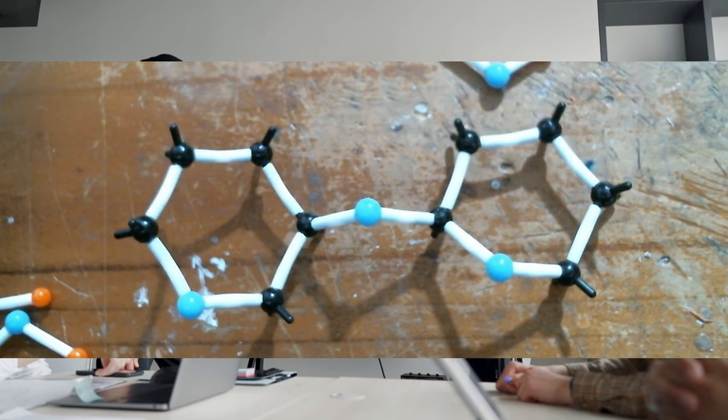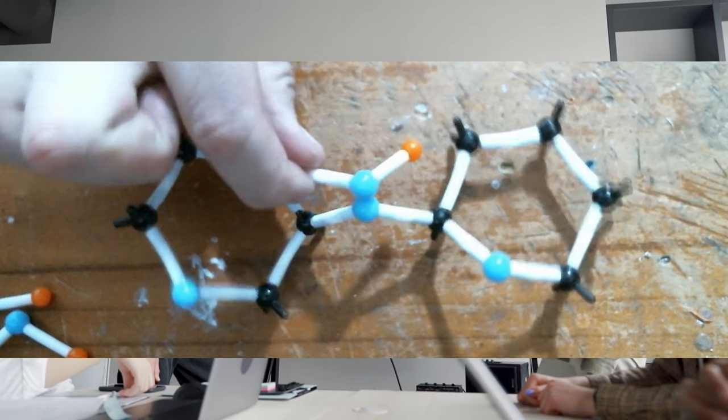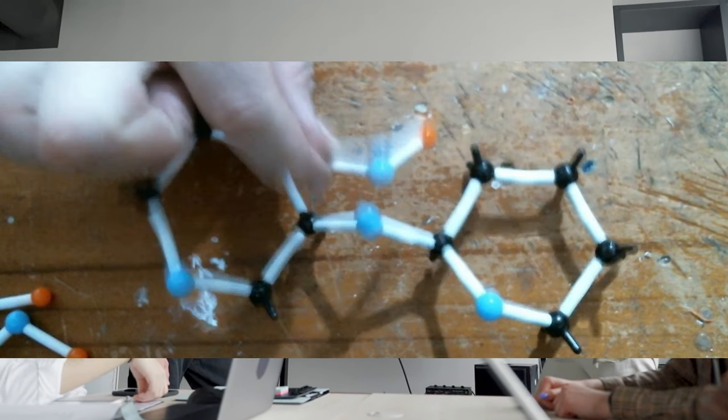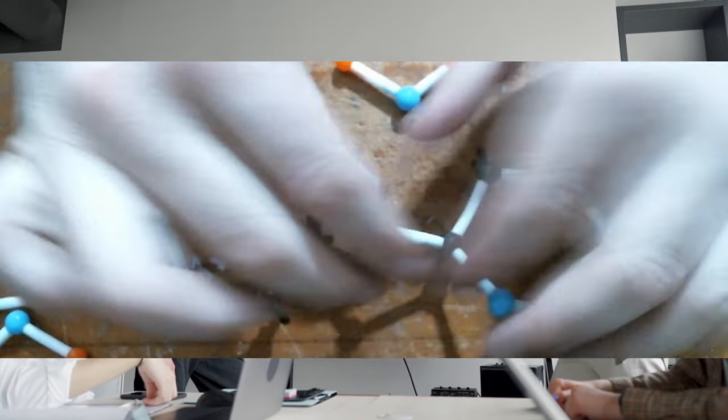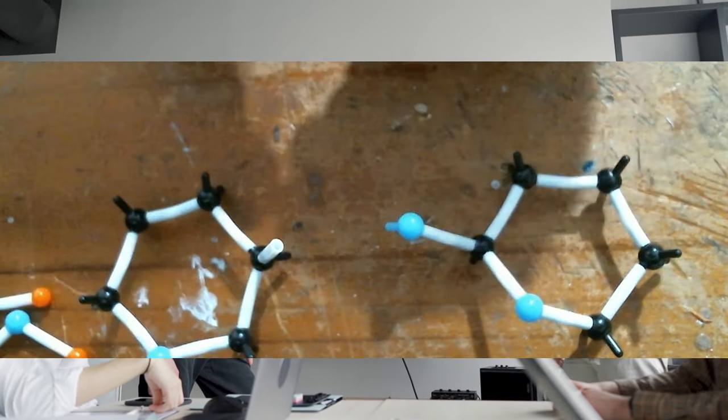This leads to a disaccharide, like for example maltose, where you have two glucoses stuck together. Hydrolysis can break this connection, leaving you with two distinct and separated glucose molecules.